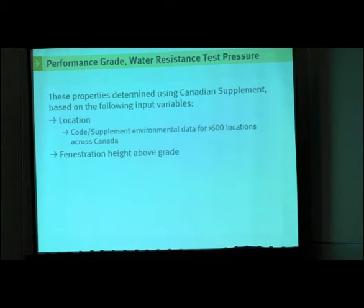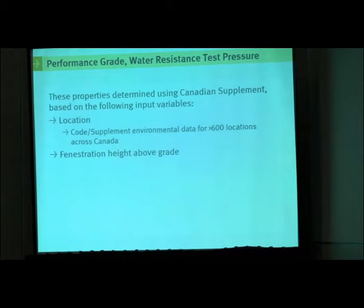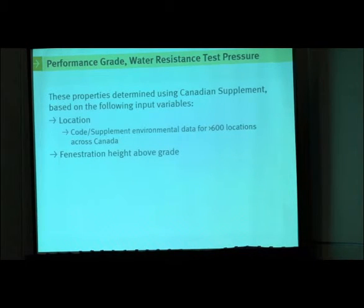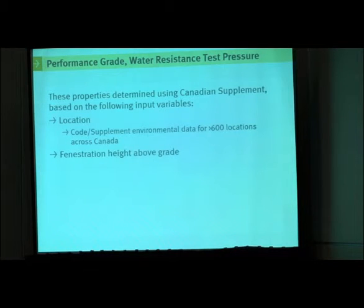You have to consider the height above grade of the fenestration element. If it's a five-story building, you'll probably want all your windows to be the same on all five floors, but technically, as you go higher up, wind loads get higher and driving rain wind pressure gets higher. At some point it sometimes makes sense economically to have different requirements on a large building.